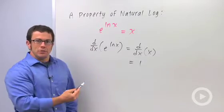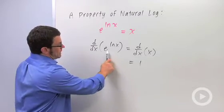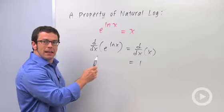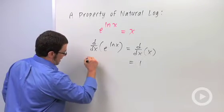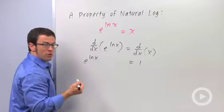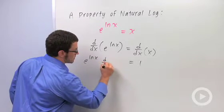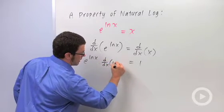And on the left side, I can use the chain rule. The derivative of e to the ln x is going to be e to the ln x times the derivative of ln x. Let's pretend we don't know that, we don't know the derivative of ln x.